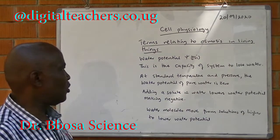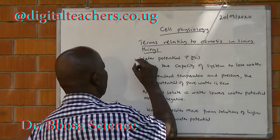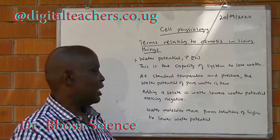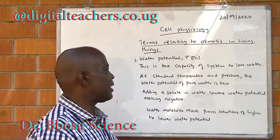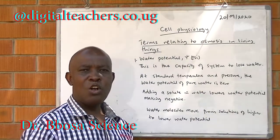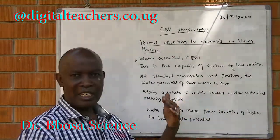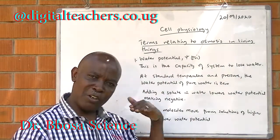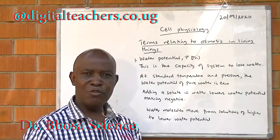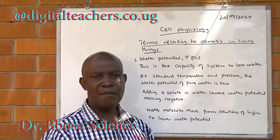Terms relating to osmosis in living things. One: water potential — this is the capacity of a system to lose water. At standard temperature and pressure, the water potential of pure water is zero. Adding a solute lowers the water potential and makes it more negative. Water molecules will always move from a solution of higher water potential to a solution of lower water potential.